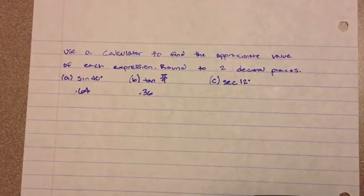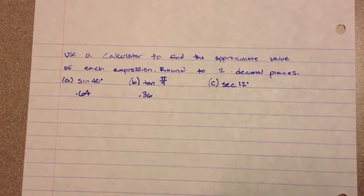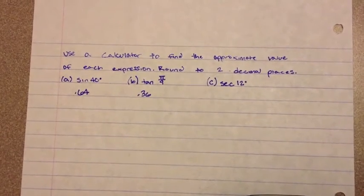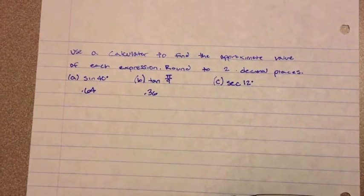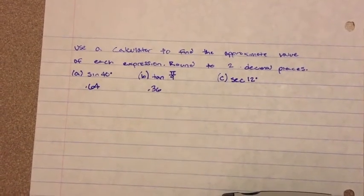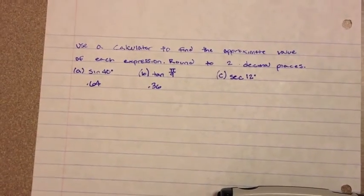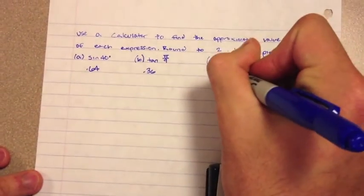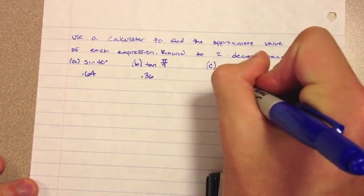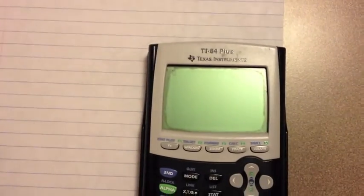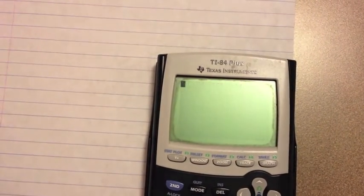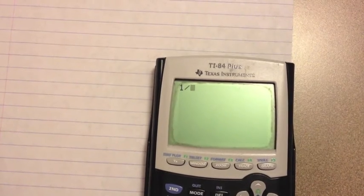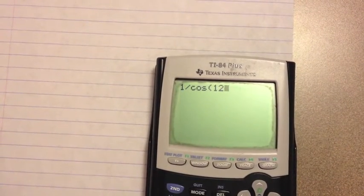For the last one, secant of 12 degrees, since there's no secant button on our calculator, we're going to use our rules. We know that secant equals 1 over cosine. So this equals 1 over cosine of 12 degrees. We go to the calculator and we have to change our mode back into degrees. And then type in 1 over cosine of 12 degrees, and that's going to equal 1.02.